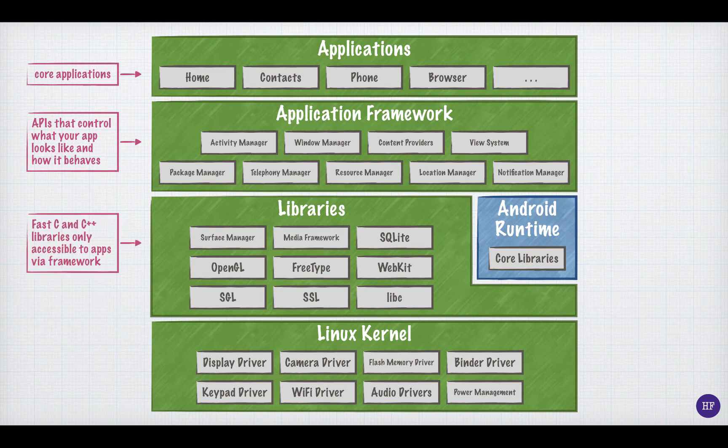The libraries underneath the application framework are fast C and C++ libraries that work closely with the core operating system. Typically, application developers do not access these libraries directly, but some libraries in the application framework will depend on these libraries.